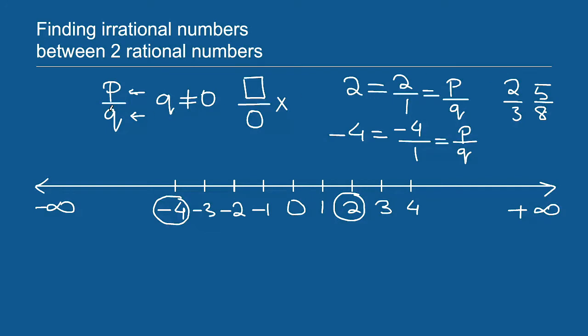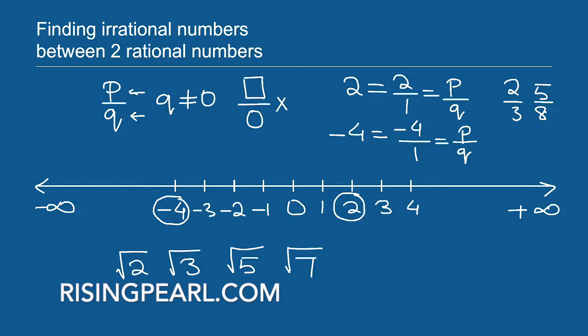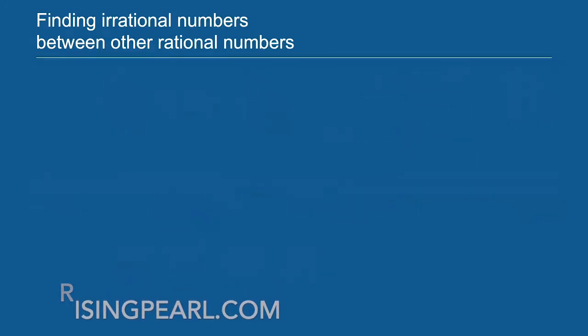So what are irrational numbers? Irrational numbers are numbers such as square root 2, square root 3, square root 5, square root 7, and so on. All these numbers are irrational, and there are infinitely many irrational numbers. The collection of all rational numbers plus all irrational numbers is known as real numbers. Now let's find out how to find irrational numbers between given rational numbers.